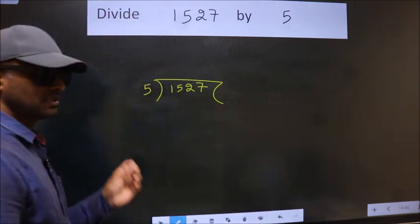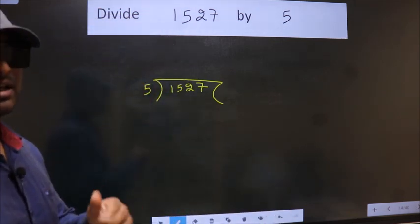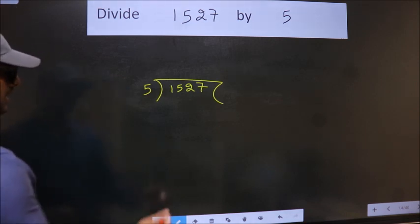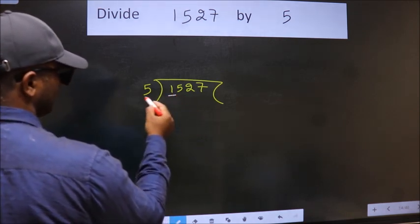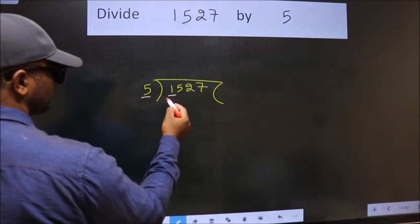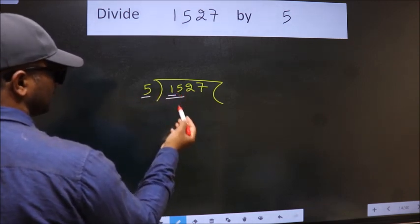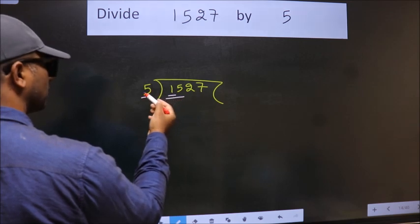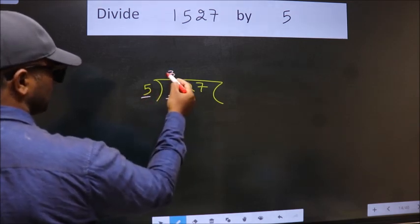This is your step 1. Next, here we have 1. Here 5. 1 is smaller than 5. So we should take 2 numbers, 15. When do we get 15 in 5 table? 5 times 3 is 15.